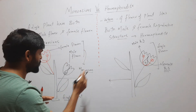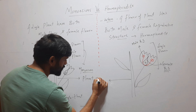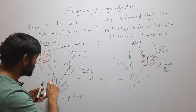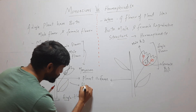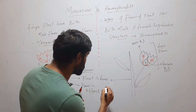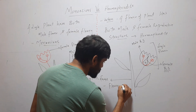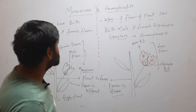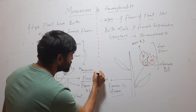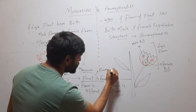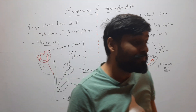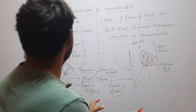Here you can see that in both cases — monoecious and hermaphrodite — the plant is the same, but what is the difference? In the case of monoecious, the flower is different, but in hermaphrodite, the flower is the same. So this is the difference: in monoecious, the plant is same but the flower is different; in hermaphrodite, the plant is same and the flower is also same.